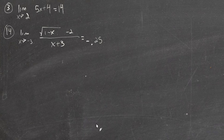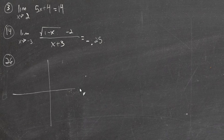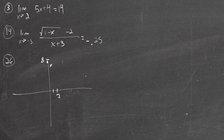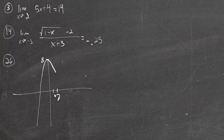Alright, for number 26, this is: graph the function and see if the limit exists. This is a piecewise function. On the left, when x is less than or equal to 2, it wants us to use 8 minus x squared — that's going to be an upside-down parabola going through the y-value 8. So on the left it's going to go down like this, and we'll close this circle because it says x is less than or equal to 2.